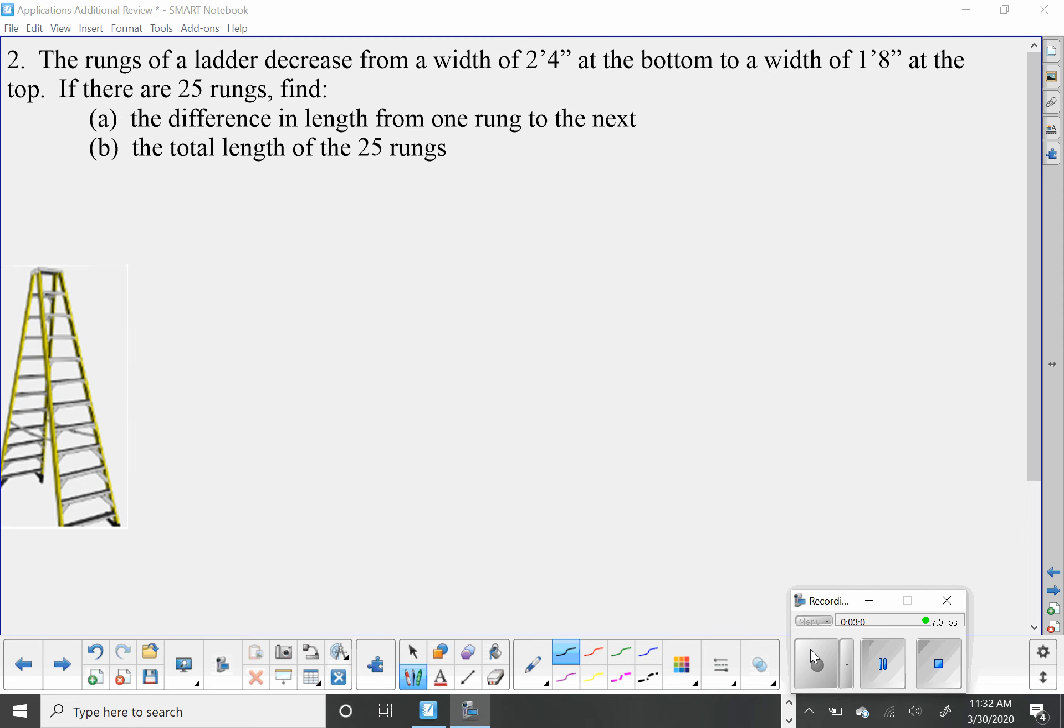The second one: The rungs of a ladder decrease from a width of 2 feet 4 inches at the bottom to a width of 1 foot 8 inches at the top. If there are 25 rungs, we're being asked to find the difference in length from one rung to the next, and the total length of the 25 rungs.